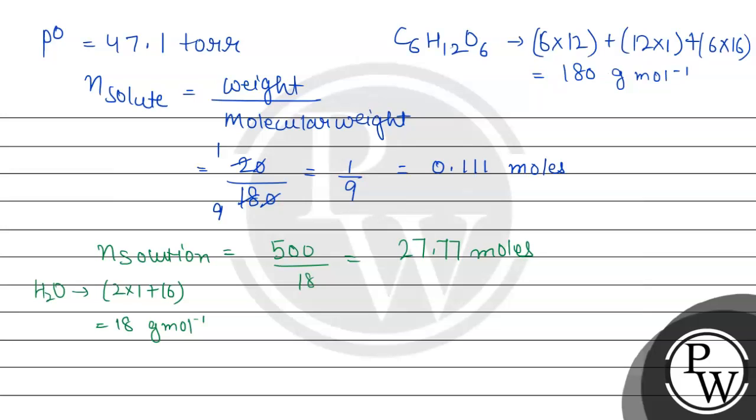Now we have values and we can use the formula. P0 minus PS divided by P0 equals the moles of solute divided by moles of solution. So p0 value is 47.1 torr minus PS, divided by 47.1 torr equals the moles of solute 0.111 divided by 27.77.